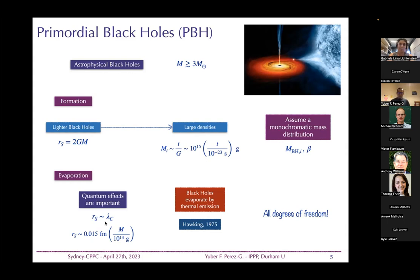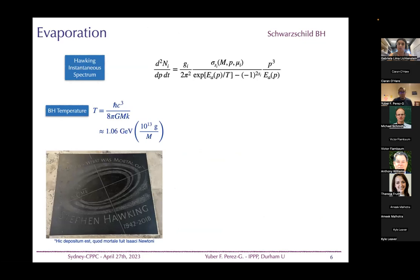This is very interesting because a population of primordial black holes could have been sources of dark matter or dark radiation produced in no other way. Hawking showed the instantaneous emission spectrum has a thermal shape depending on the black hole temperature, which is inversely related to the black hole mass. A black hole of about 10^13 grams has a temperature of around 1 GeV.